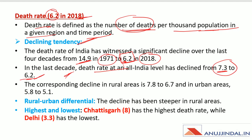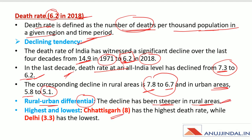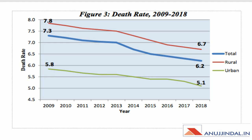The corresponding decline in rural areas is from 7.8 to 6.7, while in urban areas it is from 5.8 to 5.1. Death rate remains higher in rural areas. The highest death rate was recorded in Chhattisgarh, while the lowest is in Delhi at 3.3. The curve comparing 2009 and 2018 shows total death rate declining from 7.3 to 6.2.